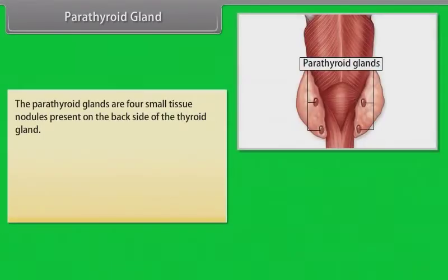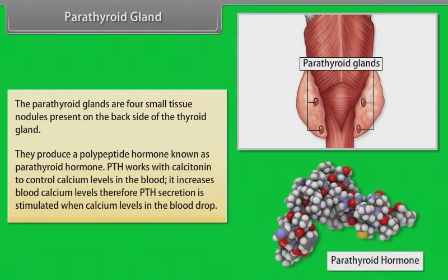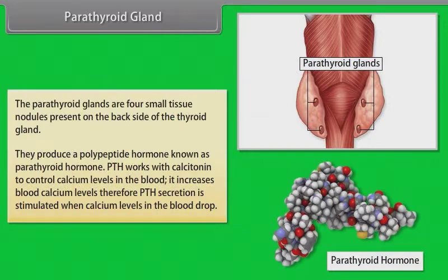The parathyroid glands are four small tissue nodules present on the backside of the thyroid gland. They produce a polypeptide hormone known as parathyroid hormone (PTH). PTH works with calcitonin to control calcium levels in the blood — it increases blood calcium levels. Therefore, PTH secretion is stimulated when calcium levels in the blood drop.